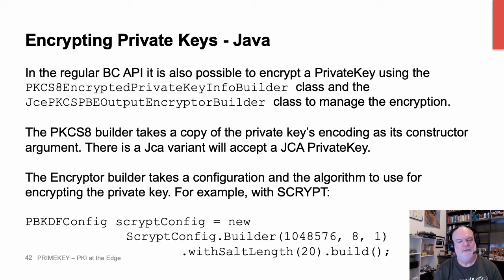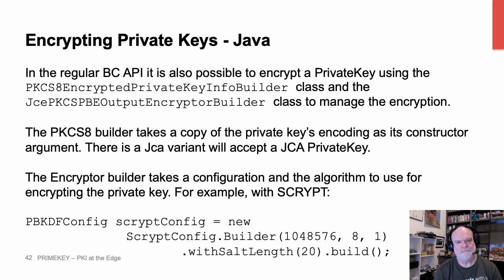When we were in session one looking at the PKCS10 certification request, you probably would have noticed in the org.bouncycastle.pkcs package that there was also a PKCS8EncryptedPrivateKeyInfoBuilder class. This is actually the core class used under the hood in the Kotlin API for constructing the private key encryptions. The other class that features here is the JcaPKCS8EncryptedPrivateKeyInfoBuilder combined with the JcePBEOutputEncryptedKeyBuilder, which is the one that actually manages the encryption and gets told to use either S-Crypt or PBKDF2.